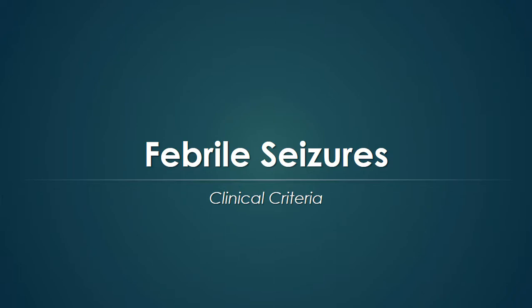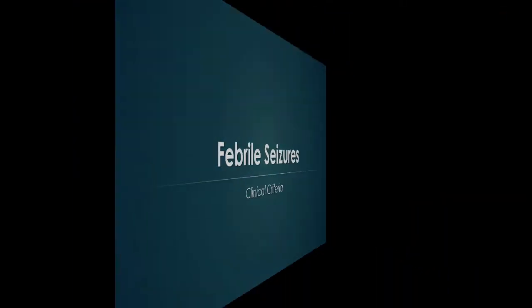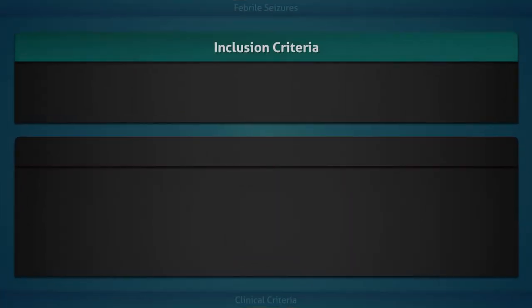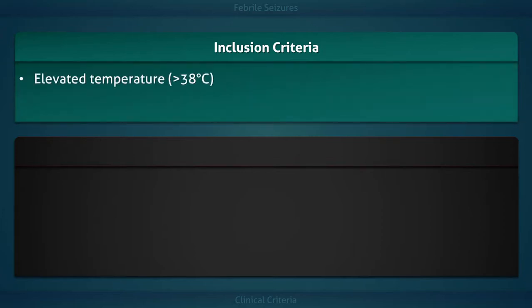Clinical Criteria for Febrile Seizures. There are two inclusion criteria for febrile seizures: a body temperature elevated above 38 degrees Celsius, and age between 3 months and 6 years.